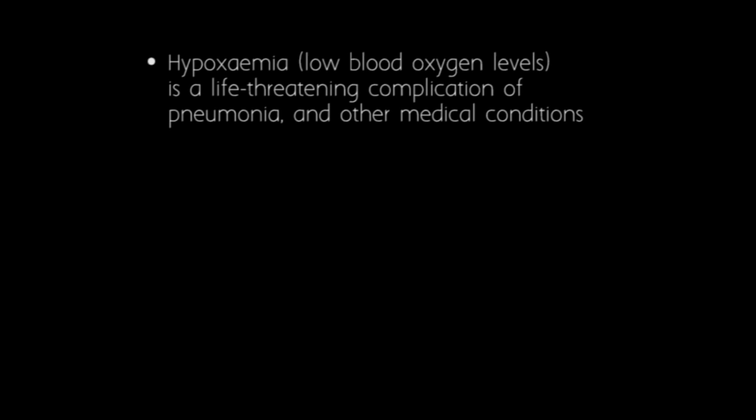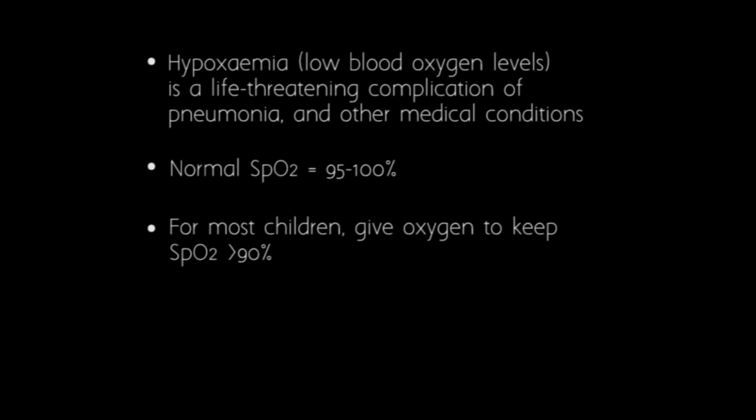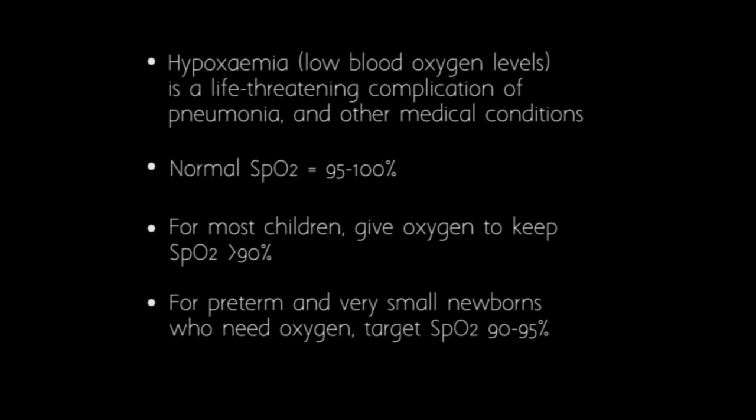Key points: Hypoxemia is a life-threatening complication of pneumonia and other medical conditions. Normal saturations in a healthy person are between 95 and 100%. For most children, give oxygen to keep saturations above 90%. For preterm and very small newborns who need oxygen, target saturations between 90 and 95%.